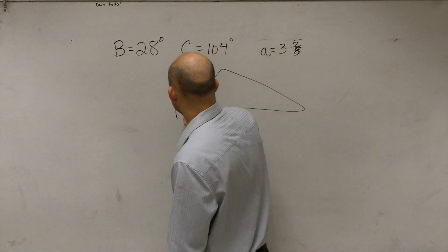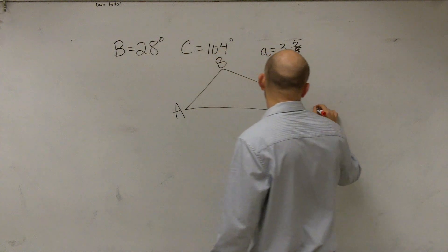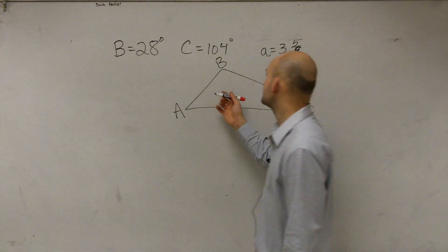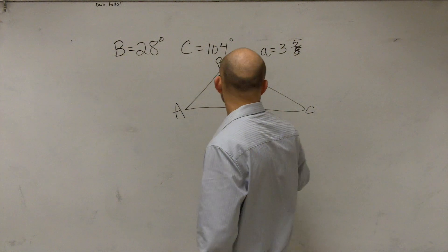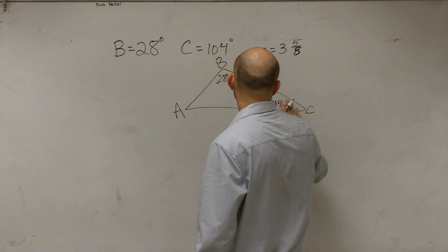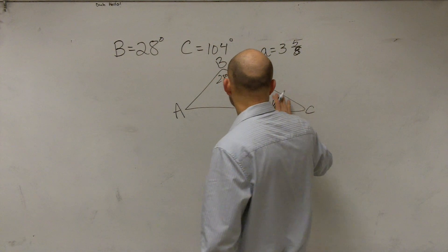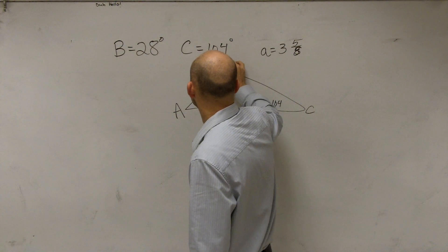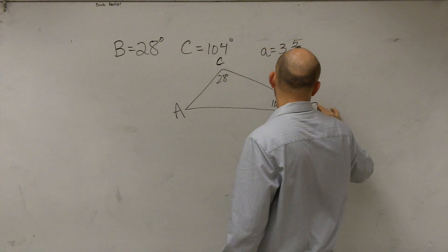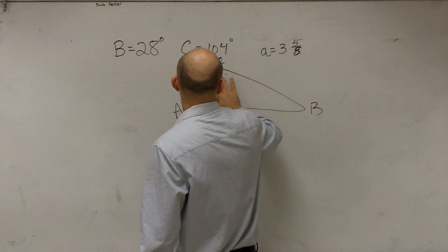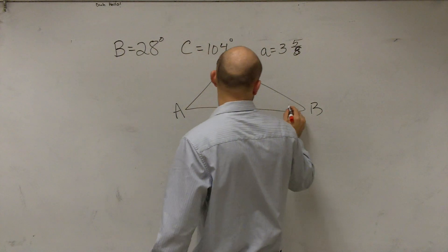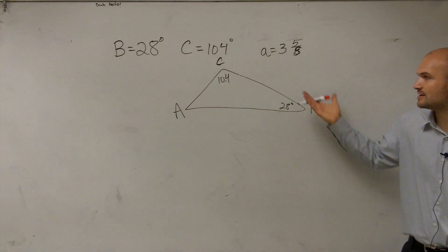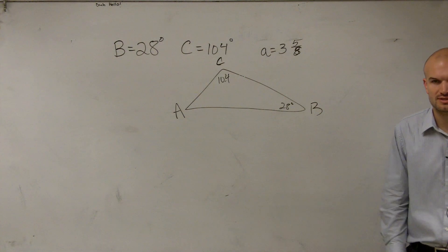So let's take a look at what information we have and then how we're going to apply the Law of Sines. Ladies and gentlemen, it doesn't really matter where you have your A, B, and C — just make sure you have them uppercase. So right now we're given 28 degrees for B and C is 104 degrees. Let's switch these so this will be C at 104 degrees and this will be B at 28 degrees.